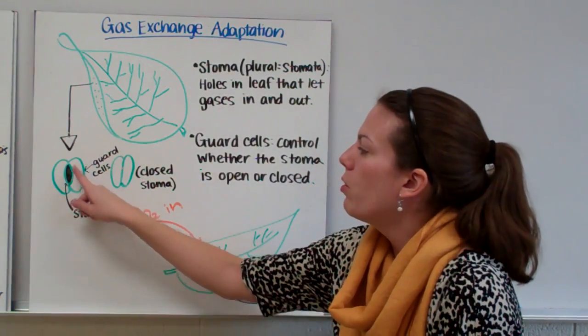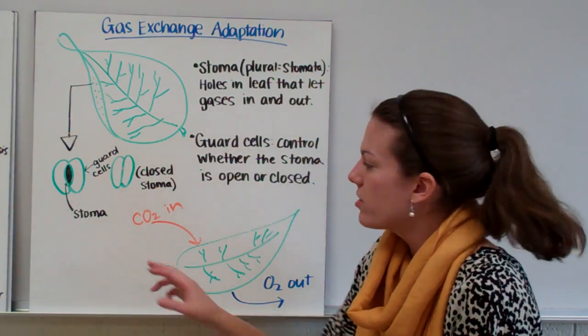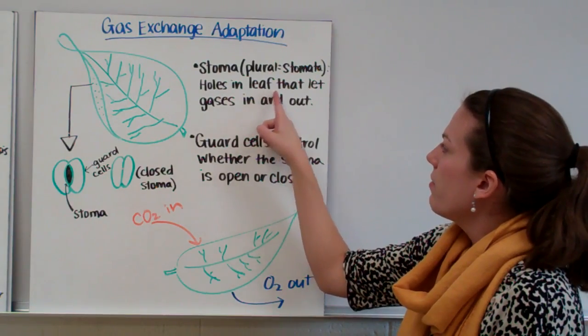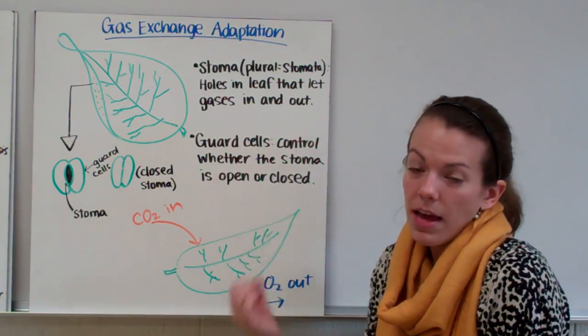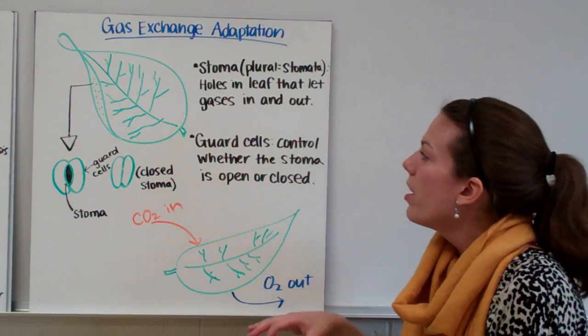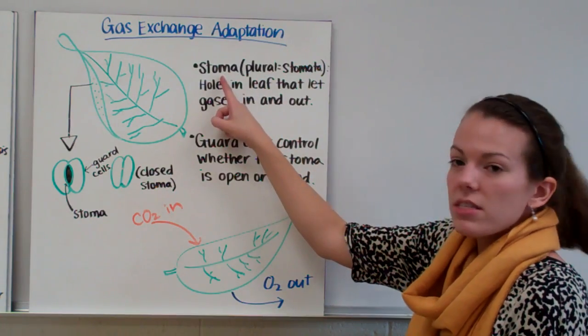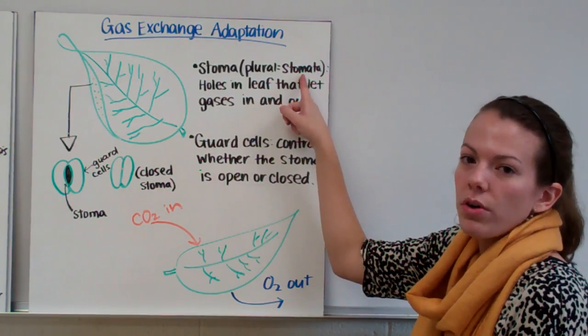So the holes look like this when they're open and this when they're closed. The actual hole or a space where things can move through is called the stoma. The stoma are holes in a leaf that let gases in and out. So gas passes in and out of that hole. Now you might hear the word stomata as well. Stoma is singular and stomata is plural. So a stomata is more than one stoma.